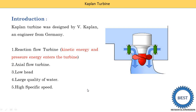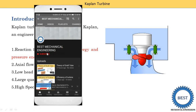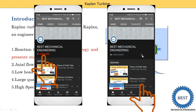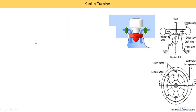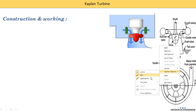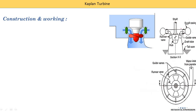After the introduction, I explain the construction and working. I request you to subscribe to my channel by pressing the subscribe button and also press the bell icon to get continuous notifications. Here we understand the construction and working of Kaplan turbines. This figure indicates the front view — the upper part is the front view of the Kaplan turbine and this is the top view of the Kaplan turbine.